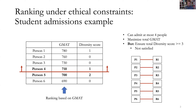However, it has a requirement — a diversity score constraint. It wants to ensure that the total diversity score of admitted students is at least three. And if you look at the current allocation — if you just admit the top four people by GMAT — this constraint will be violated, because the total diversity score is just two.